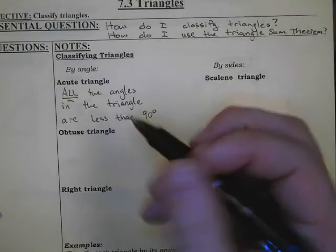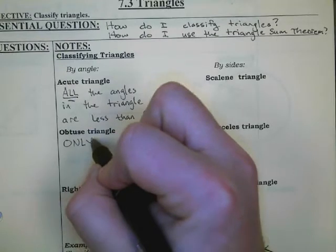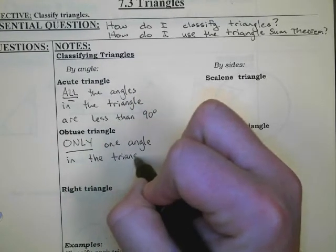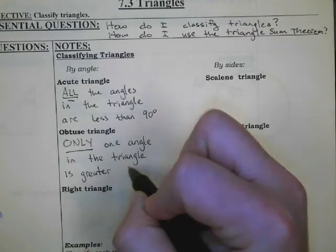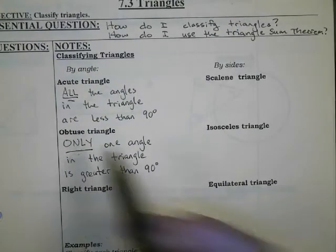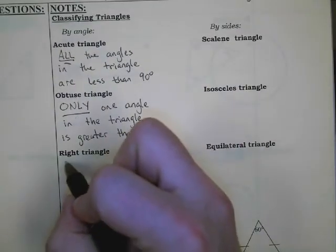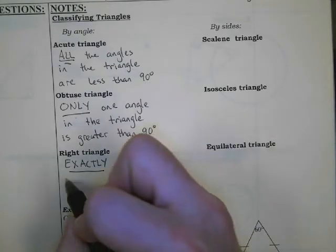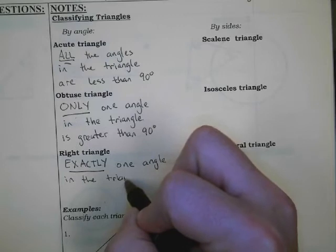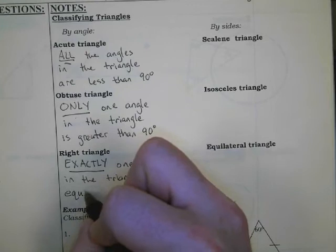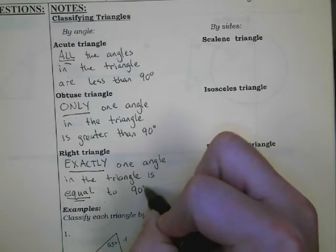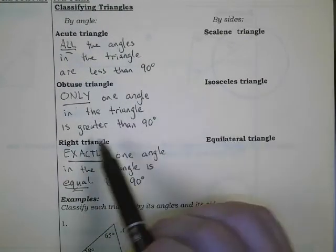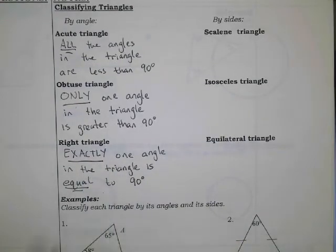We also have the obtuse triangle, where only one angle in the triangle is greater than 90 degrees, and there will only be one such angle. And then we have a right triangle, where exactly one angle in the triangle is equal to 90 degrees.